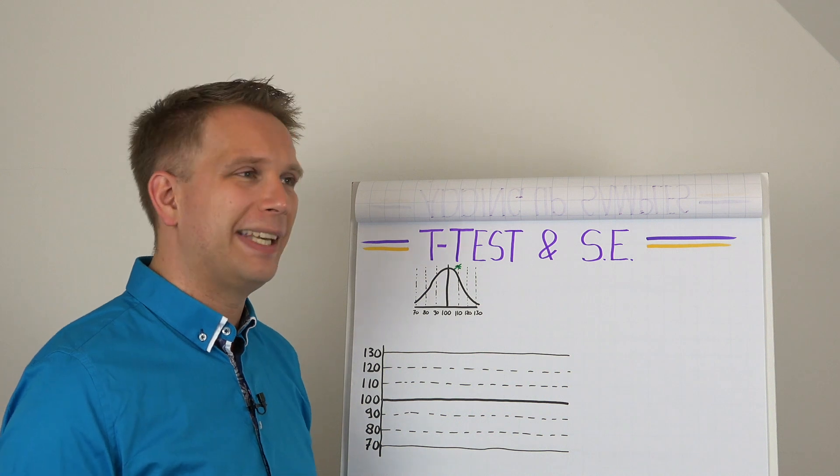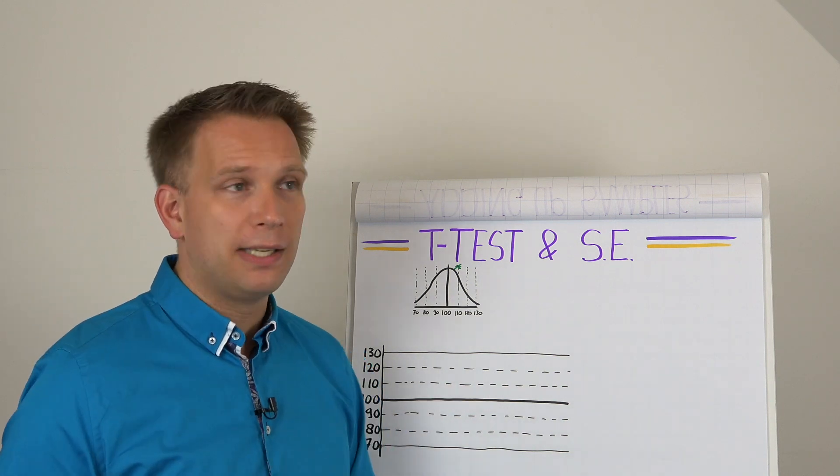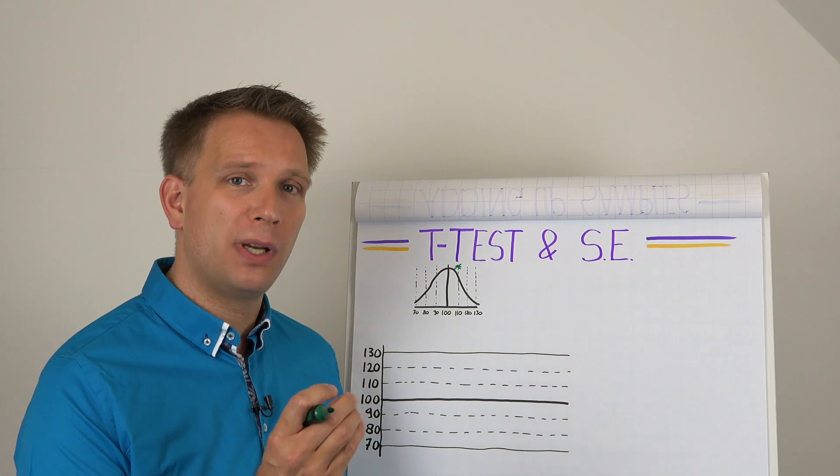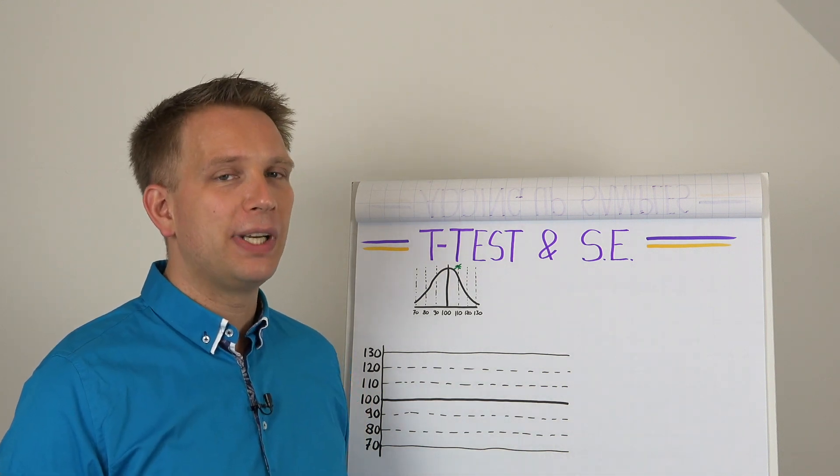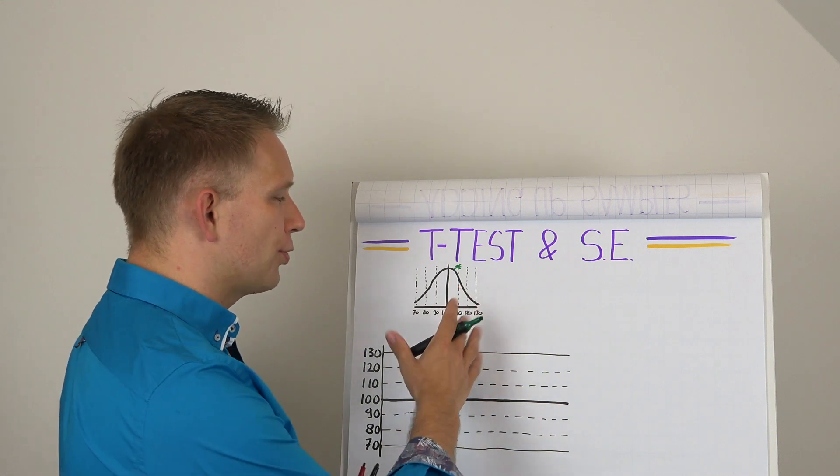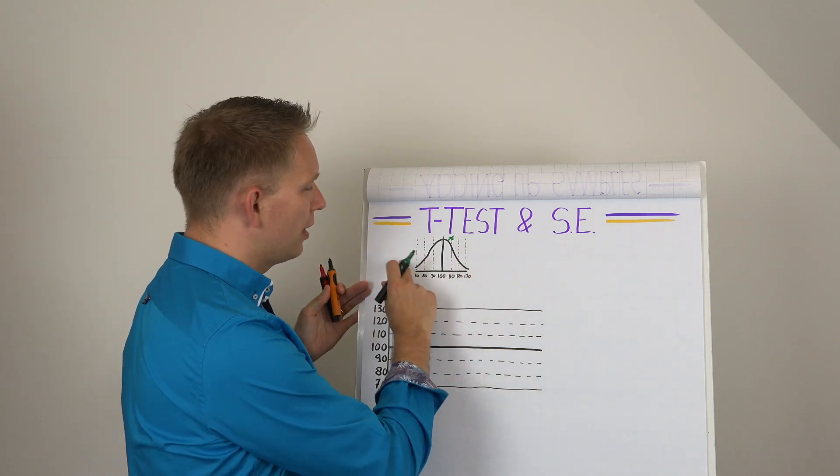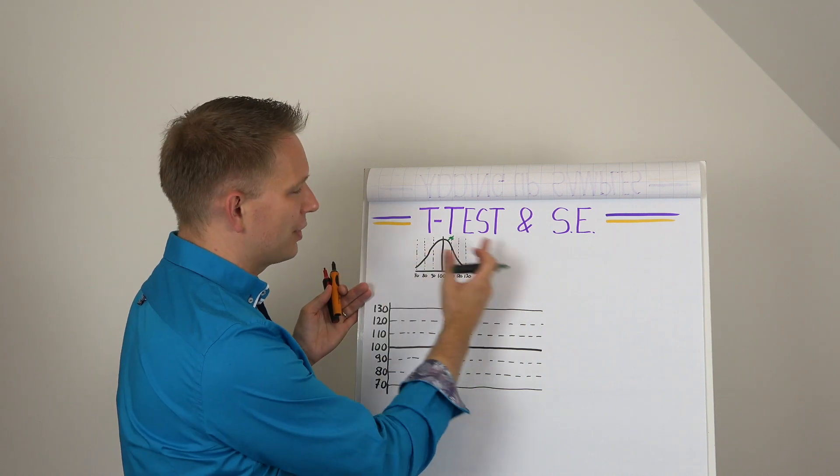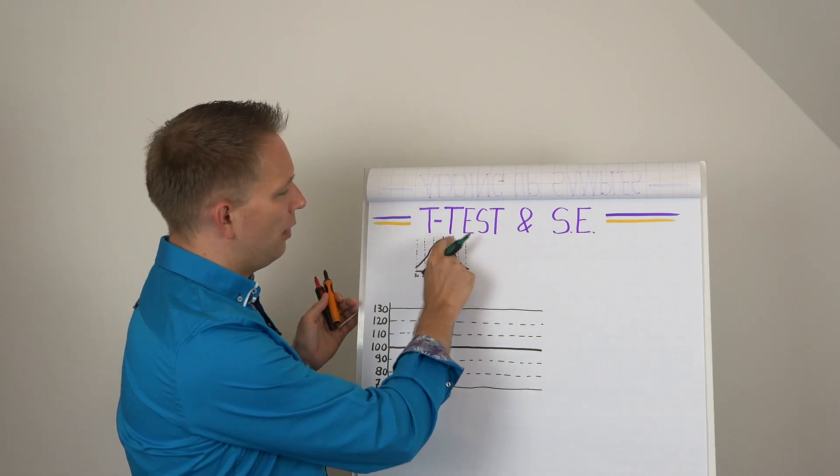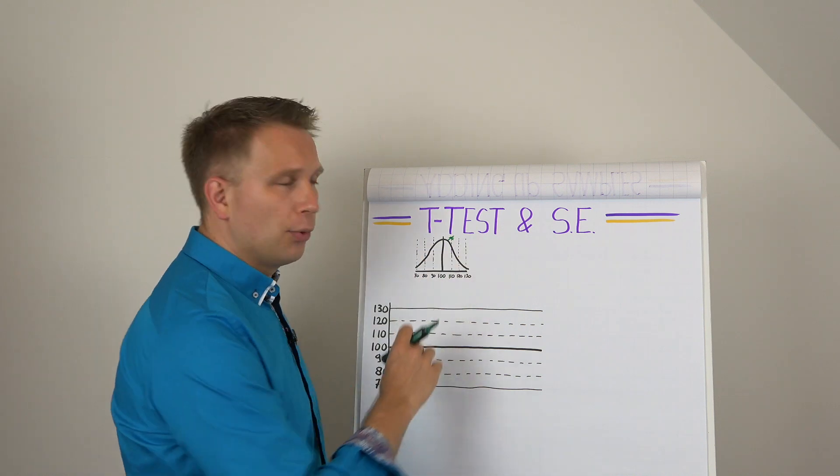But the more statistically inclined will say that depends on how much variation there is in this whole product line. If we see products that can be anywhere between 80 and 120, maybe 110 was just a normal value. But if usually it's all between 99 and 101, well, then this really is an outlier or a shift in the process. The usual way that we handle this is by checking also with the standard deviation.